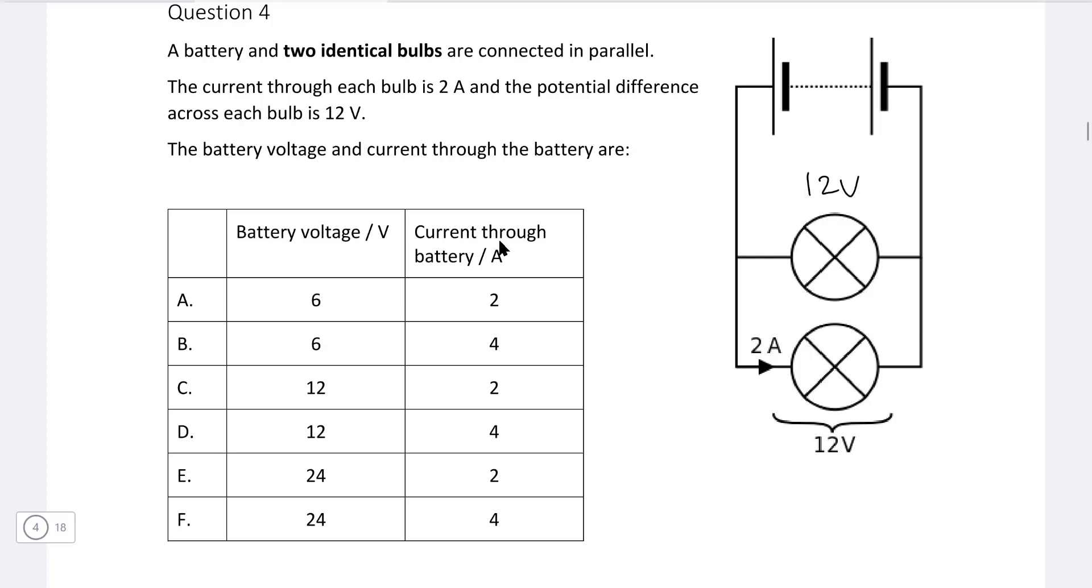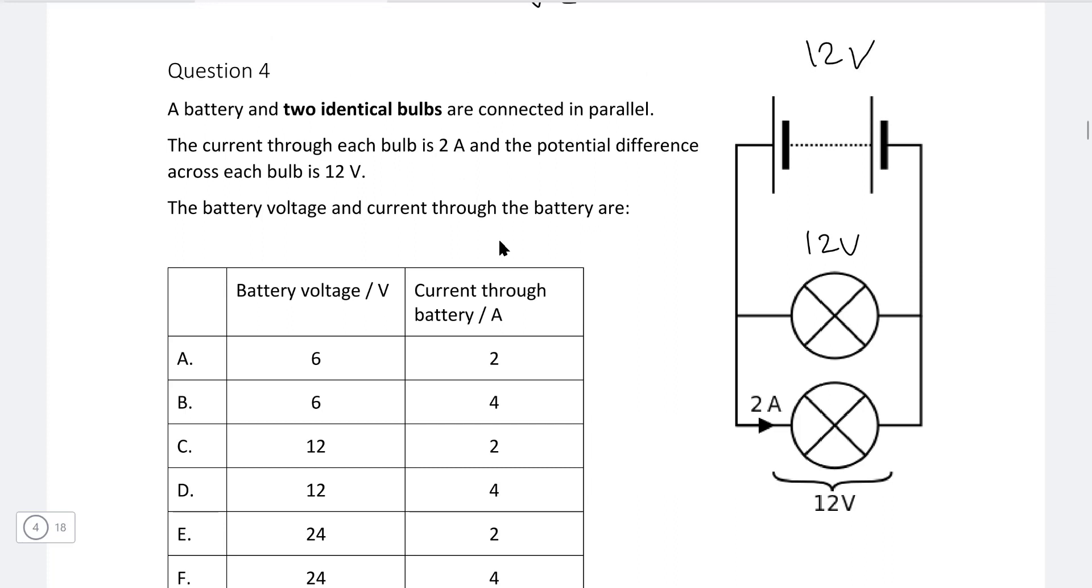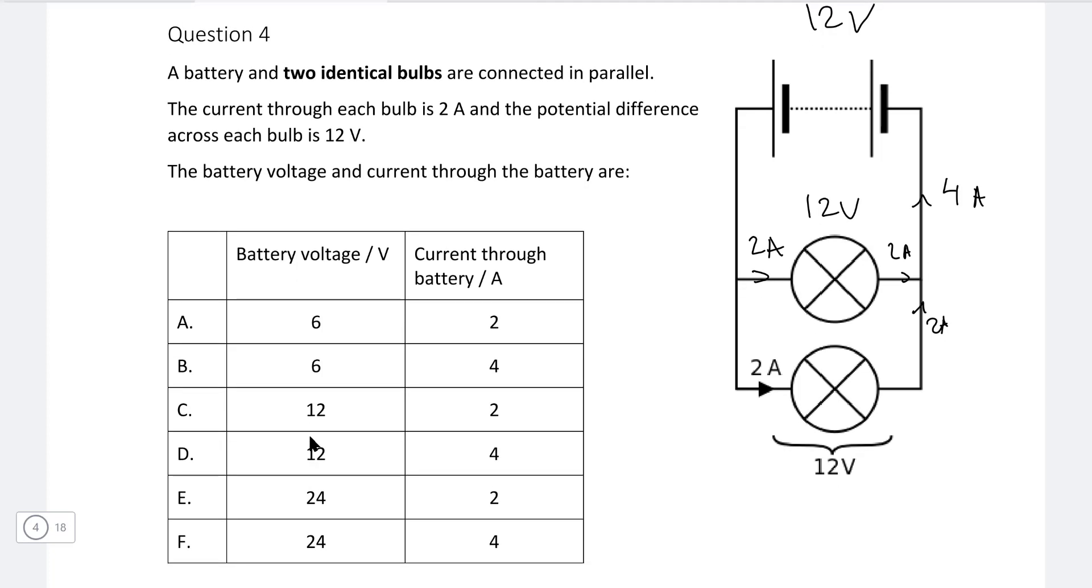So all of these components are in parallel, meaning that the PD will be the same, so this one here will be 12 volts. This also means that our battery is going to be at 12 volts. Now the current though is going to split, and if the bulbs are identical they're going to have the same current that runs through them, which is 2 amps. Now through the battery though we're going to have 2 amps going through here but also 2 amps going through there. So overall in this part of the circuit we are going to have 4 amps in total, meaning that the correct answer is going to be D.